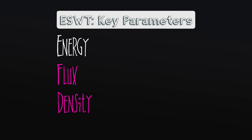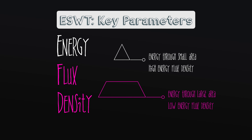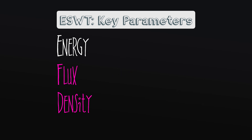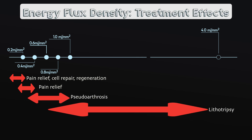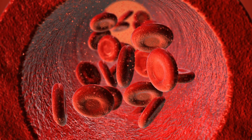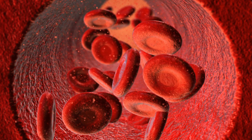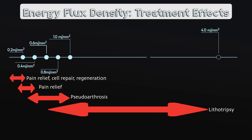When it comes to the parameters of extracorporeal shockwave therapy, energy flux density is the key term to know. It is based on the flow of shockwave energy through an area, and its unit of measurement is given in millijoules per square millimeter. Lower and medium energy flux densities, ranging from less than 0.08 mJ/mm² to about 0.28 mJ/mm², trigger the release of nitric oxide, which is beneficial due to its antalgic, angiogenetic, and anti-inflammatory effects, whereas higher energy flux densities of up to about 0.6 mJ/mm² are recommended for the treatment of things like pseudoarthrosis.